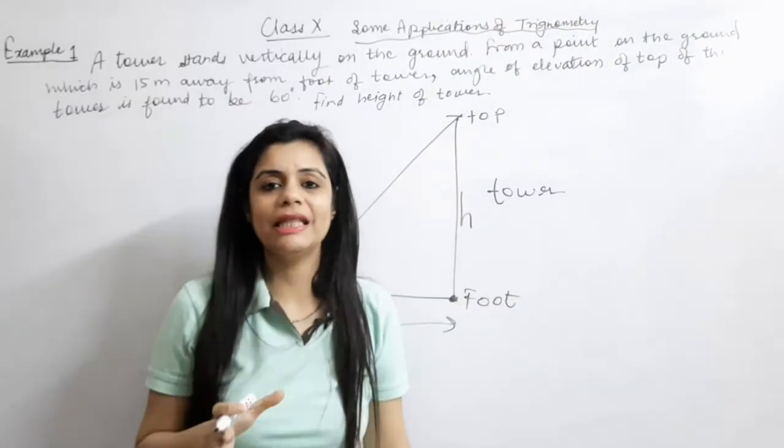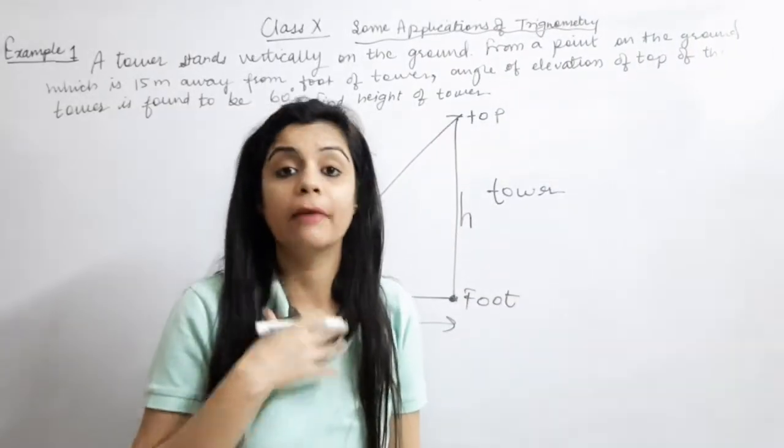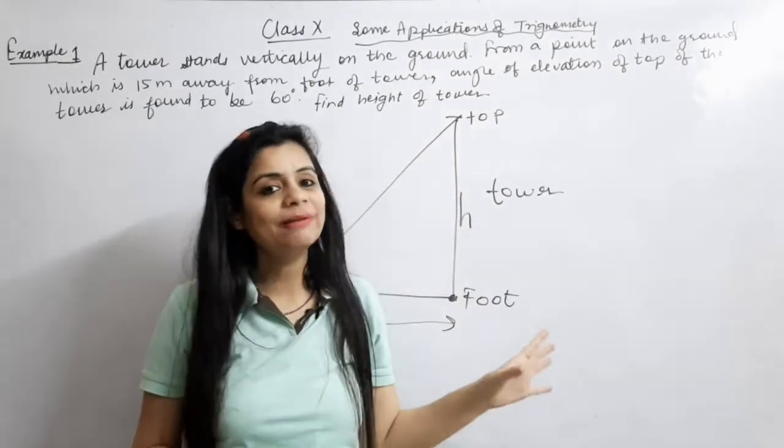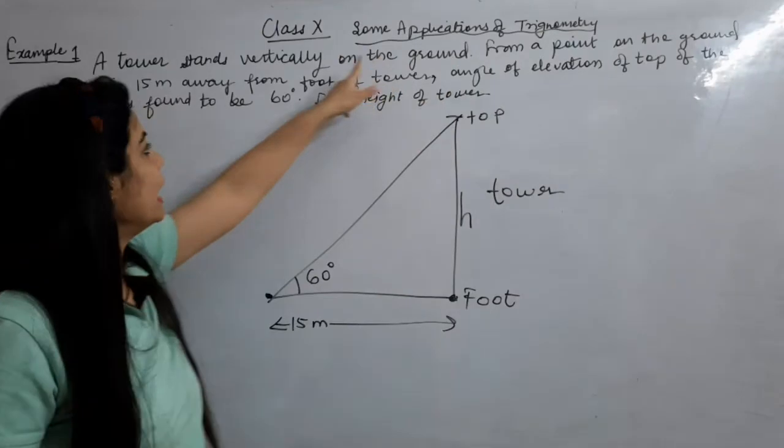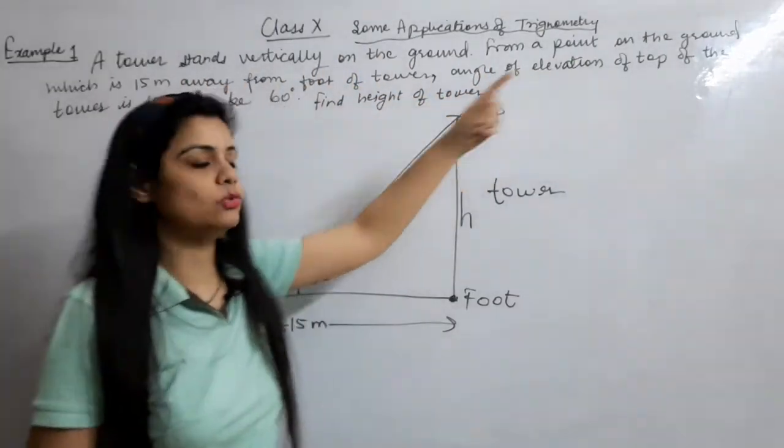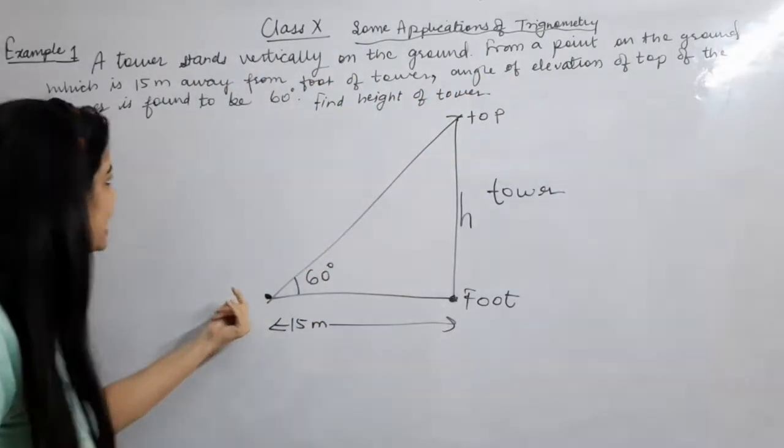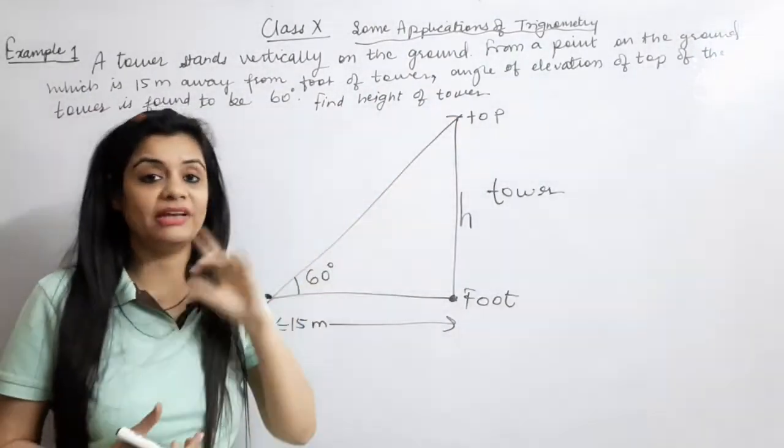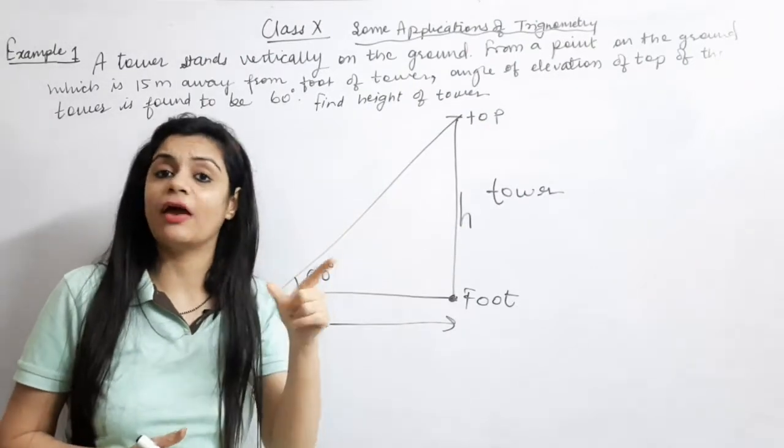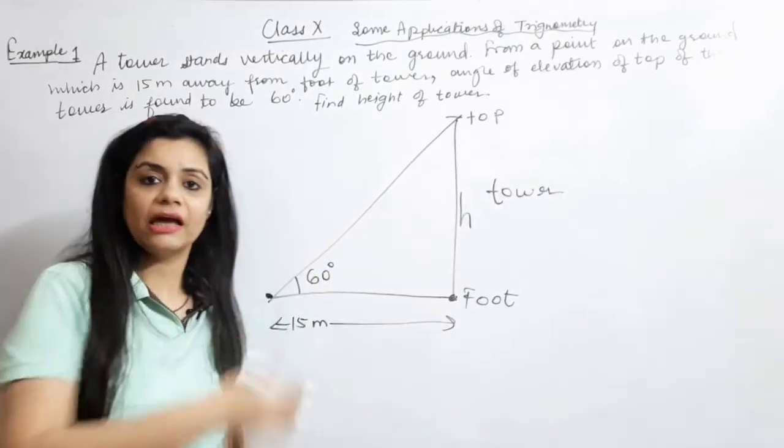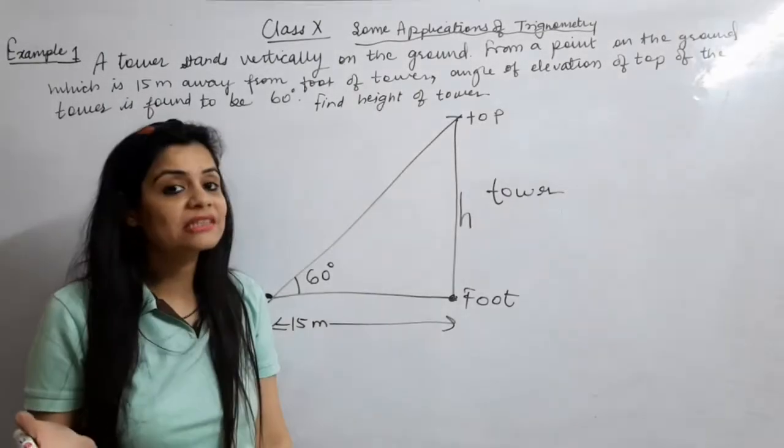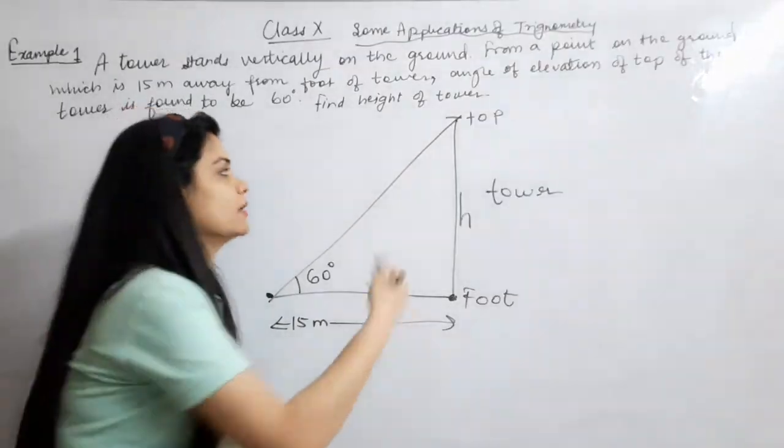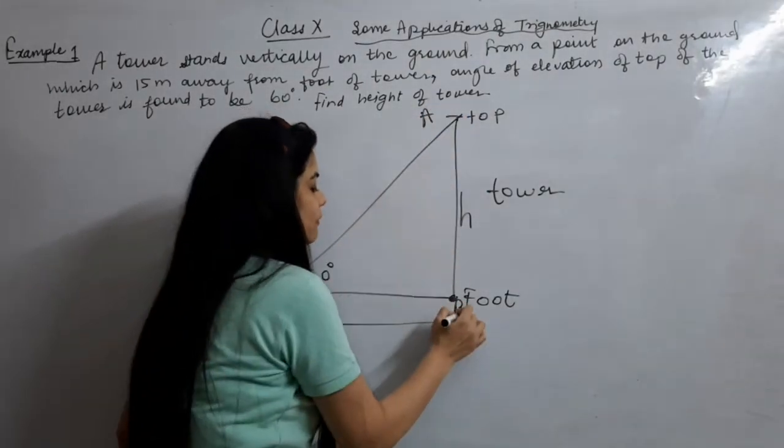We will see where we are. That person observer is standing there and my object is standing there. This question is clear that tower from a point on the ground. Who should we see? Tower of the top. What is the object? Where are you seeing? From the ground. So that means what use of angle? Angle of elevation.